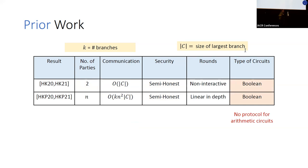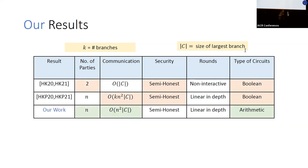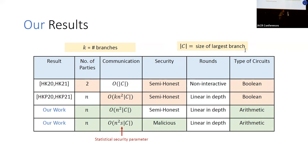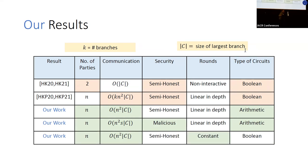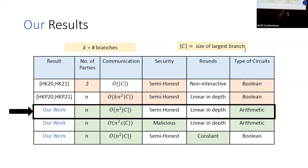In this work, we positively resolve almost all of these questions. We design an n-party protocol where the total communication is independent of the number of branches, and our protocol works over arithmetic circuits. We present variants with communication complexity both linear and quadratic in the number of parties. We also show this protocol can be extended to the malicious setting, though with an additional multiplicative dependence on the statistical security parameter. Finally, we extend it to a constant-round setting, albeit only for Boolean circuits. Due to time constraints, I'll focus on our first result.